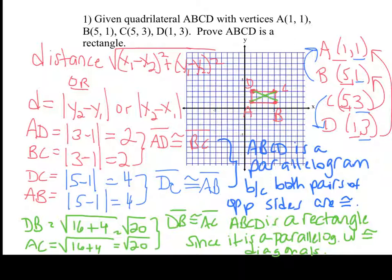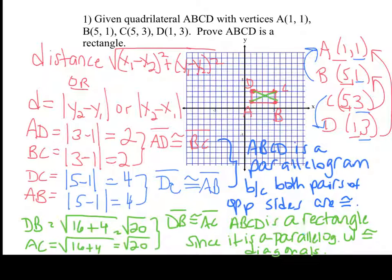The length of DB equals radical 20, and the length of AC also equals radical 20. Here's the next conclusion: segment DB is congruent to segment AC. And the final conclusion: ABCD is a rectangle, since it is a parallelogram with congruent diagonals. Notice we proved first that it was a parallelogram, then found congruent diagonals — and it's a rectangle because it's a parallelogram with congruent diagonals.